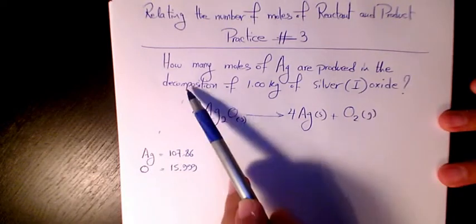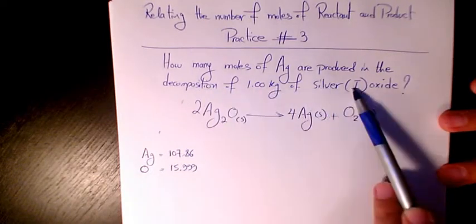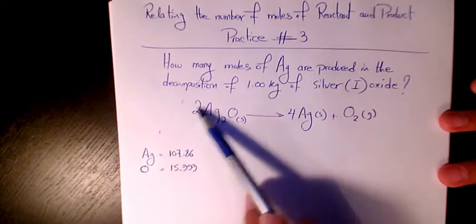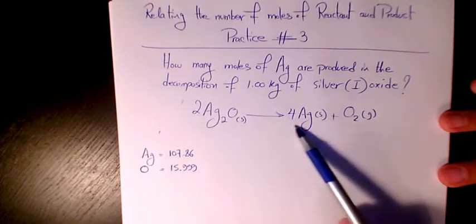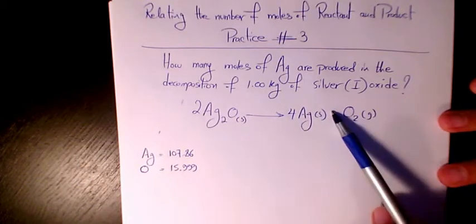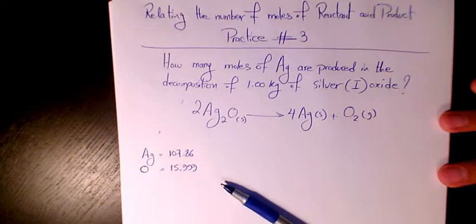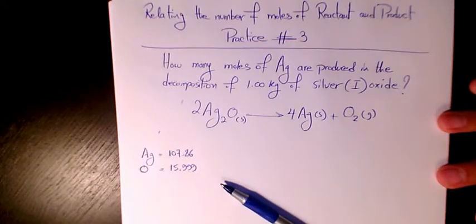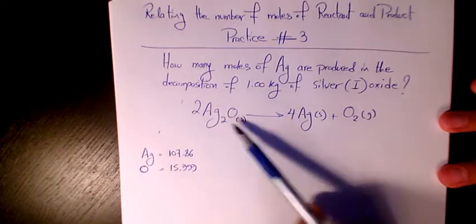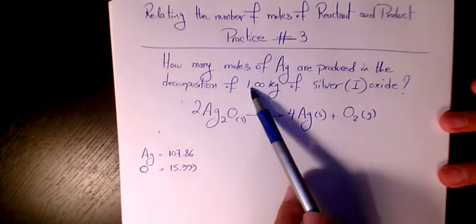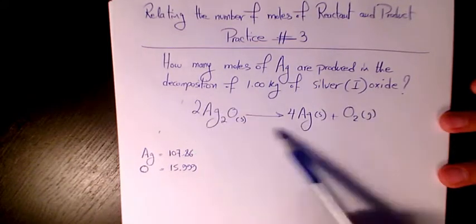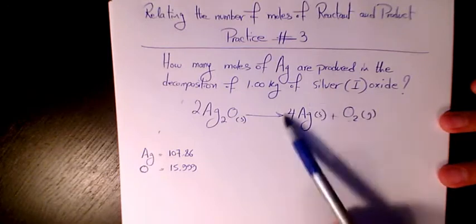Silver(I) oxide decomposes and produces Ag and O2. As you see here, the reaction is balanced—we have 4 Ag here and 4 Ag here. We have 1 kg of silver oxide and we need to estimate how many moles of Ag is produced.